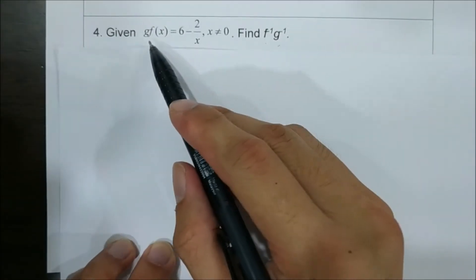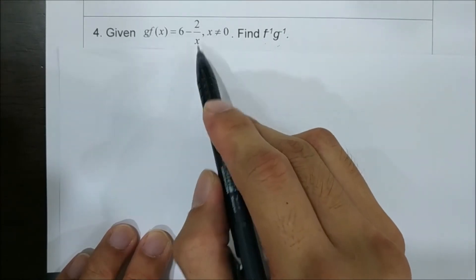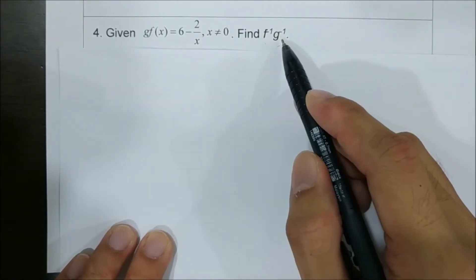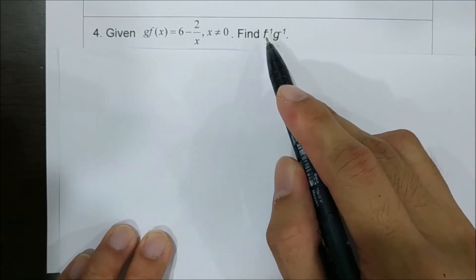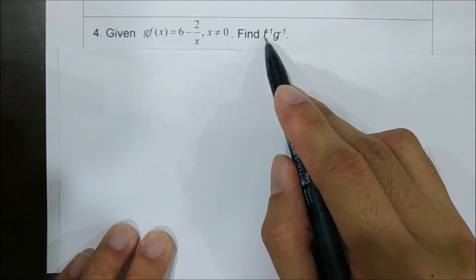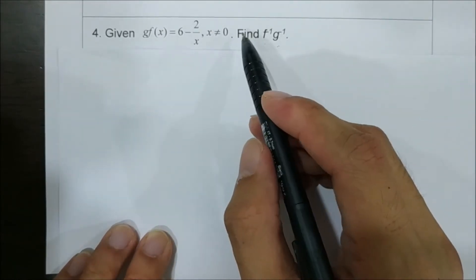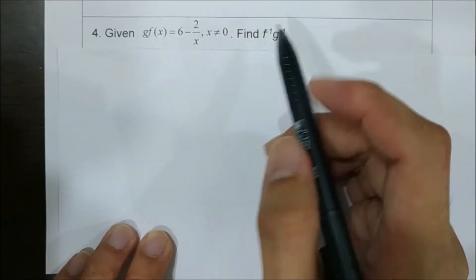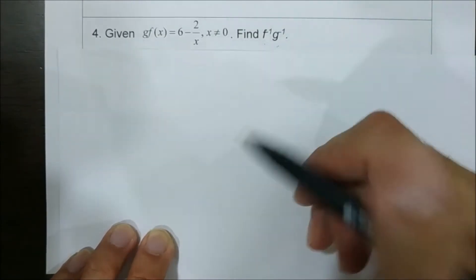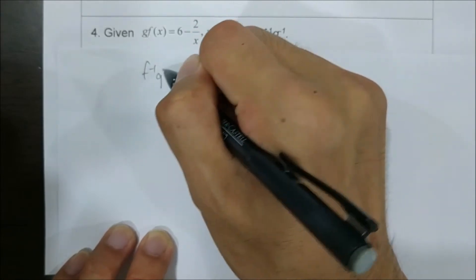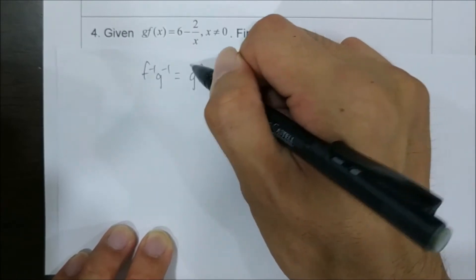Question 4. For this question, you are given composite function gf(x) equals to 6 minus 2 over x, and you need to find f inverse g inverse. Usually to find f inverse g inverse you find them separately, but here they didn't give f and g respectively — they give a composite function. So f inverse g inverse actually equals to (gf) inverse.